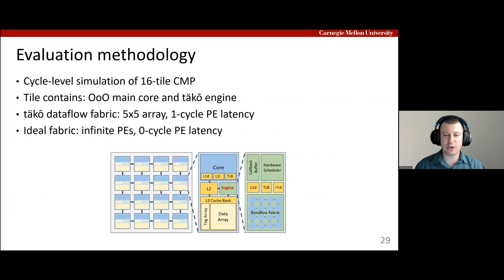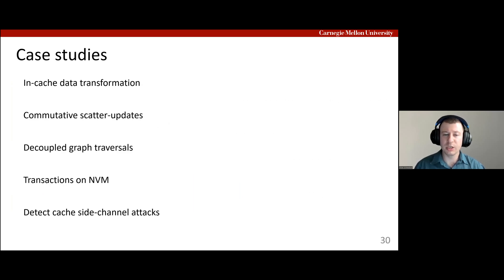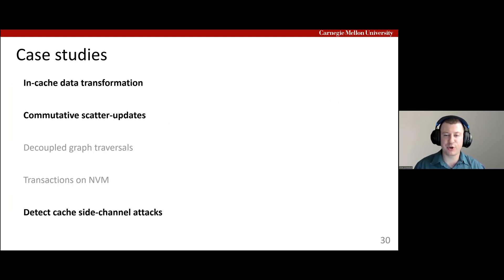We evaluate TACO in cycle-accurate simulation. Our system consists of 16 tiles, each with an out-of-order core and a TACO engine. In total, we evaluate five different case studies, but I only have time to go over three for this talk. We already looked at the decompression study, so we'll look at two more: starting with an example that redefines the cache to exhibit push semantics, and finishing with an example that detects cache side-channel attacks.